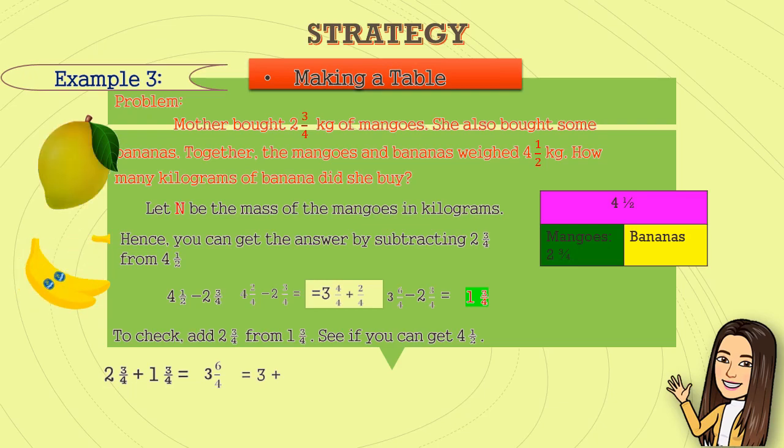Next, six-fourths is not yet in the simplest form. Then, we will simplify. That becomes one and one-fourth. Then, add the whole numbers. That is four and two-fourths. Four and two-fourths is not yet in the simplest form. So, we will simplify. The answer is four and one-half. Four and one-half is the total mass or kilograms of mangoes and bananas. Therefore, our answer is correct. One and three-fourths kilograms of bananas.